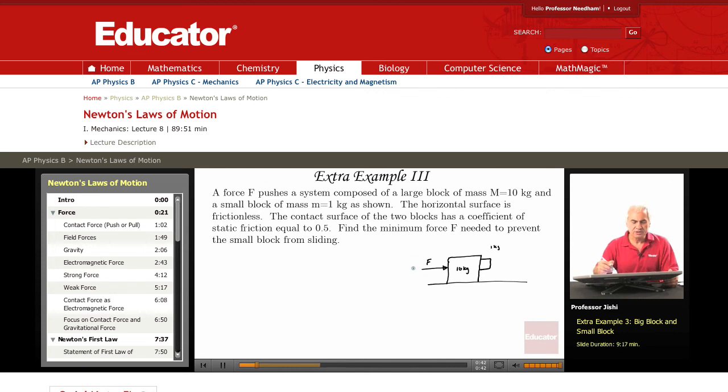The horizontal surface is frictionless, so here μ equals zero. The contact surface of the two blocks here has a coefficient of static friction 0.5, so here μ_s on this surface is 0.5.